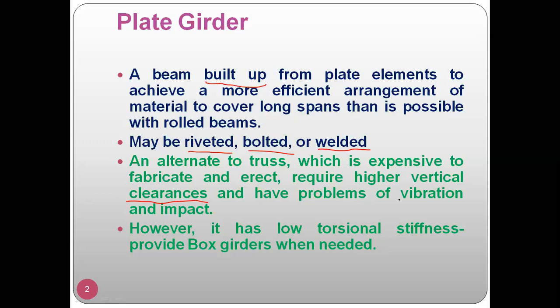When you require vertical clearance for movement and have problems of vibration and impact, trusses struggle because when a structure is subjected to moving loads there is a lot of vibration and impact load. Trusses aren't able to carry that kind of load because they have many joints connected by welding, and welding cannot take fatigue loads. Welded joints easily undergo failure in roof trusses when subjected to vibration and impact loads.